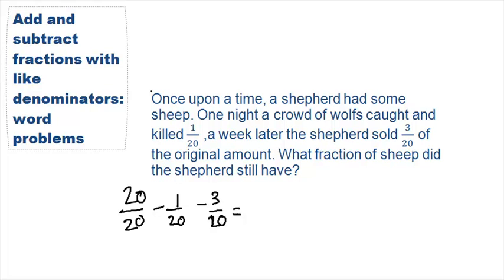This looks like a subtraction problem we are familiar with. Notice that the denominators are the same so the denominator will carry over into the answer. We will only perform the operations on the numerators. So 20 minus 1 is equal to 19, and 19 minus 3 is equal to 16.